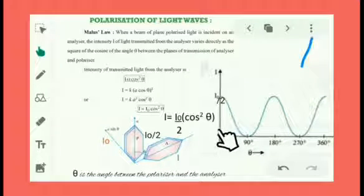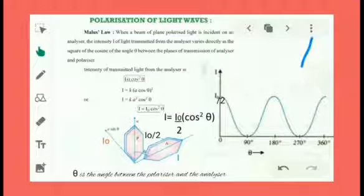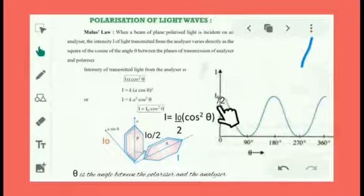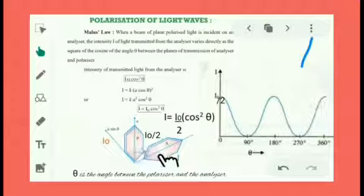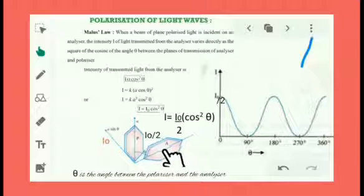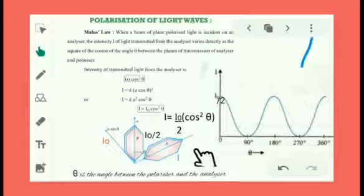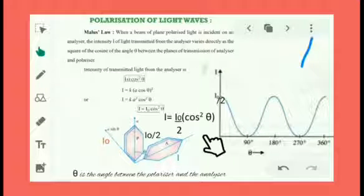The graph shows the variation of intensity with angle between the pass axis of the polaroid and the analyzer, demonstrating that light is a transverse wave. When these two are parallel, we get maximum intensity; when crossed, the intensity is minimum. We can polarize light waves, but we cannot polarize sound waves, because sound is a longitudinal wave.